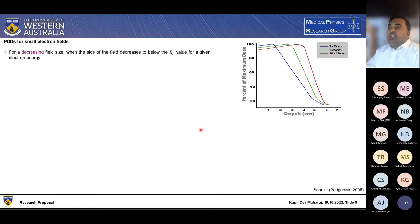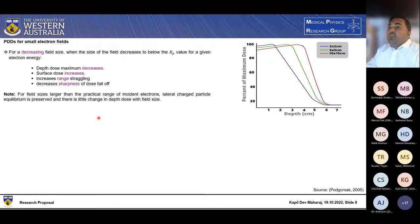Percentage depth dose for small electron fields. For decreasing field size, when the side of the field decreases below the practical range value for given electron energy, we can observe from the left hand side figure that depth dose decreases as the field size decreases. Surface dose becomes increased. Increasing range is straggling. Decreases sharpness as you can see. So the dose falls with the decreasing field size. Note for field sizes larger than the practical range of incident electron, lateral charge particle equilibrium is preserved and there is little change in the depth dose with the field size.